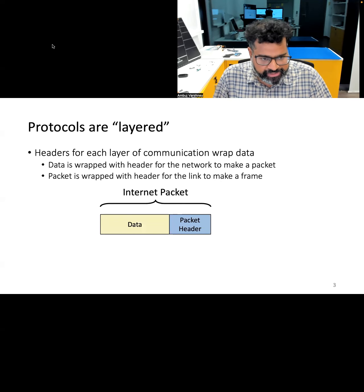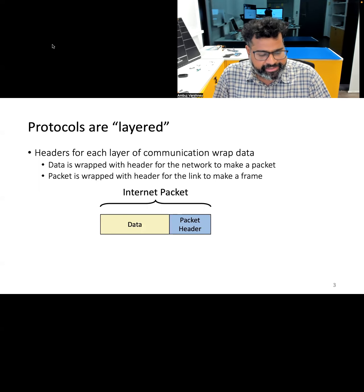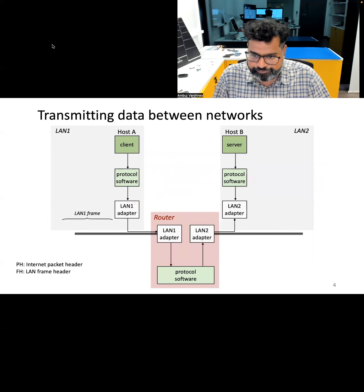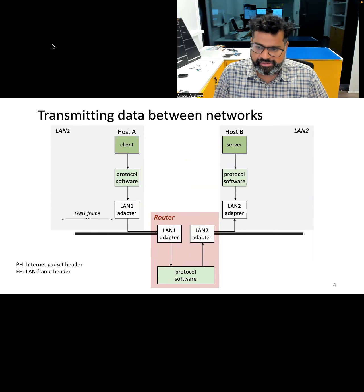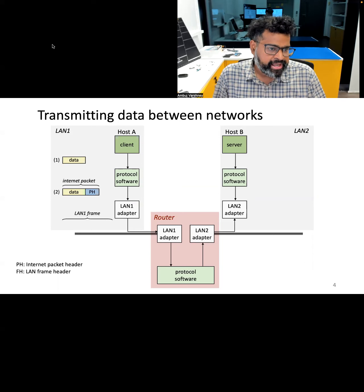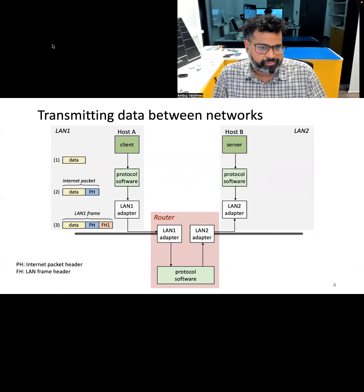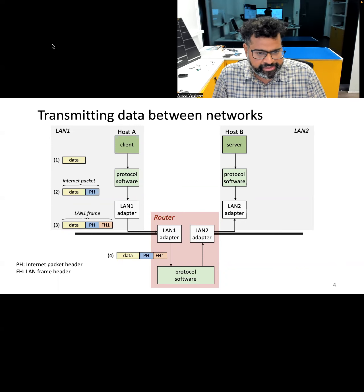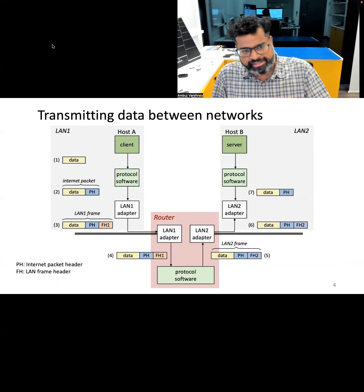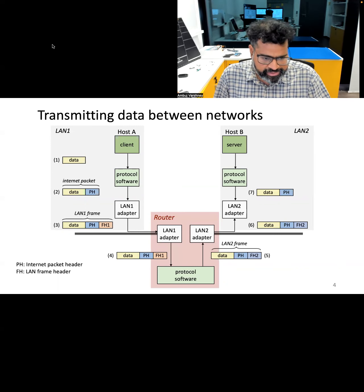Here we have an example of an internet packet: it has data, a packet header, and it is then encapsulated with a frame header to form an Ethernet frame. We can also look at this process in detail. We have two hosts, host A and host B, which are trying to connect through Ethernet. The data is encapsulated with a header, then with an Ethernet frame header, transmitted, and at the receiving side a reverse operation is performed to recover the data, with the header removed at each layer.